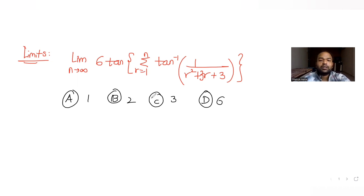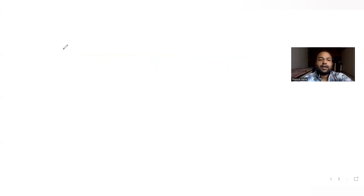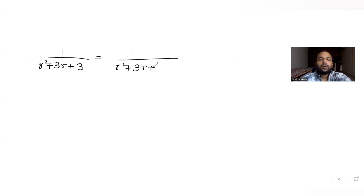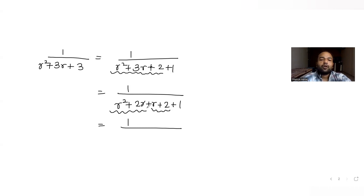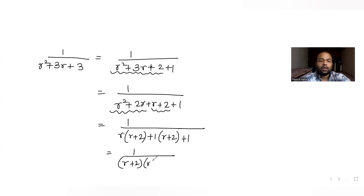To solve this, I first simplify 1 upon r squared plus 3r plus 3. I split the 3 as 2 plus 1, giving 1 upon r squared plus 3r plus 2 plus 1. Factoring the quadratic r squared plus 3r plus 2 gives r squared plus 2r plus r plus 2, which factors as r(r+2) + 1(r+2), giving (r+1)(r+2).